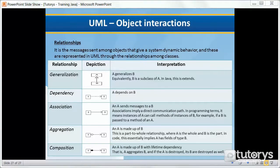In UML, interactions are also known as relationships. It's the messages sent among objects that give a system dynamic behavior, and these are represented in UML through the relationships among classes.